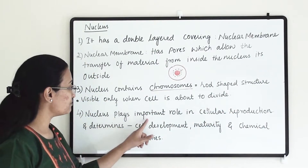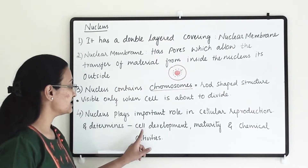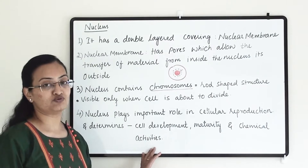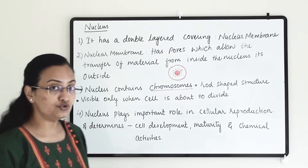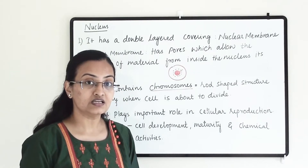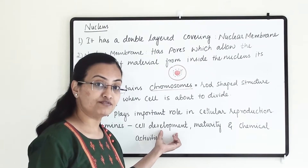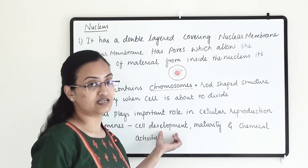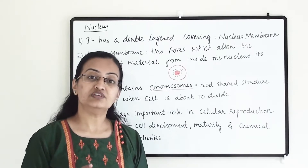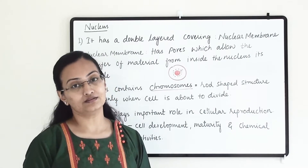Nucleus plays an important role in cellular reproduction and determines cell development, maturity, and all types of chemical activities. Basically, the nucleus will direct the cell to perform activities. When the cell is about to mature, it will direct and help in cell division. All activities happening within the cell are directed and controlled by the nucleus.